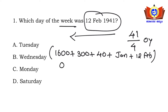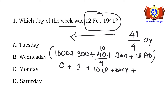For 1600 we get 0 odd days, for 300 we get 1 odd day. For 40 years, 40 divided by 4 is 10 — so 10 leap years and 30 ordinary years. January gives 3 odd days.